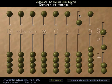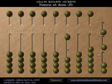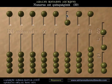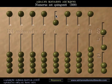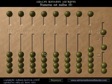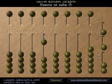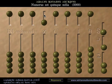Quinquae? Five. Decem? Ten. Quinquaginta? Fifty. Quentum? One hundred. Quingenti? Five hundred. Mille? One thousand. Quinquemilia? Five thousand.